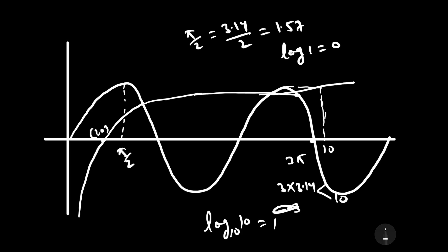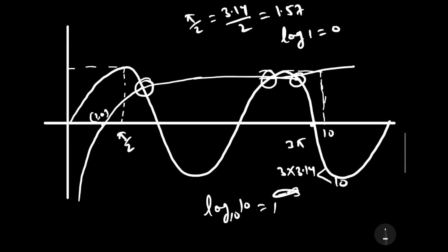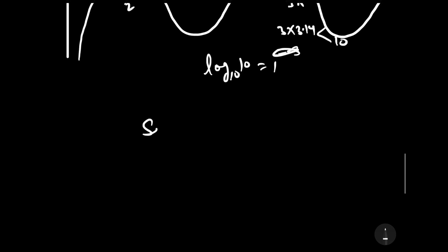Since log base 10 of 10 equals 1 and the maximum value of sin x equals 1, it means it has 3 points of intersection. This is a point of intersection, this is a point of intersection, and this is a point of intersection. It means sin x equals log base 10 x has 3 points of intersection.